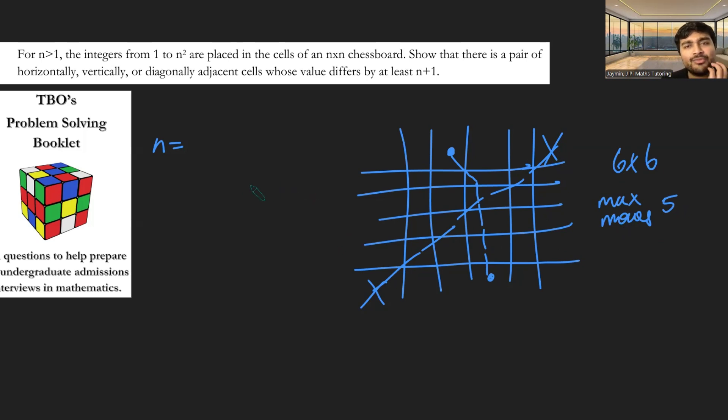How does this allow us to prove that there must be at least one pair of adjacent squares, either diagonally, vertically, horizontally, that differ by at least n plus 1? Well, let's do this by contradiction. Let's imagine we have these numbers filled in 1, 2, 3, 4, whatever, all the way up to n squared.